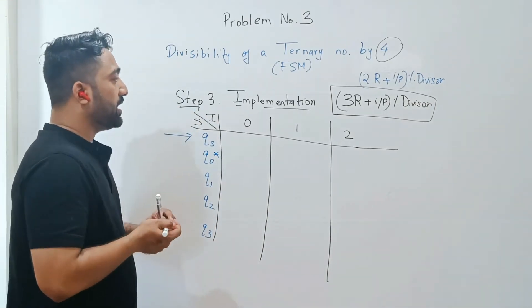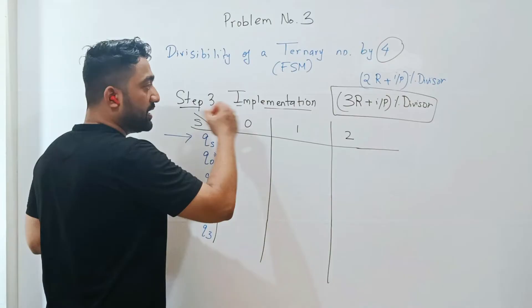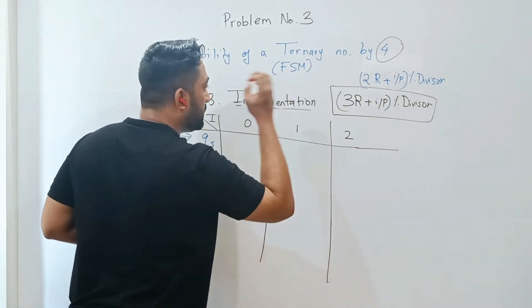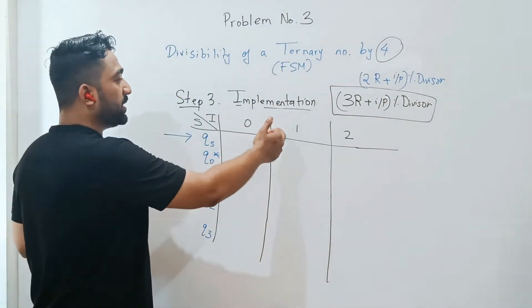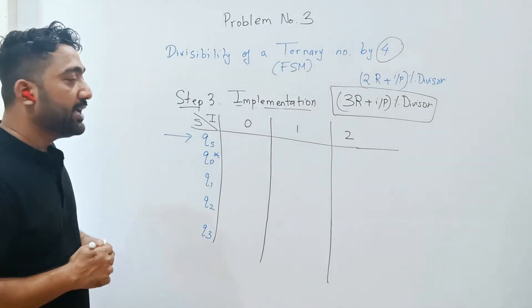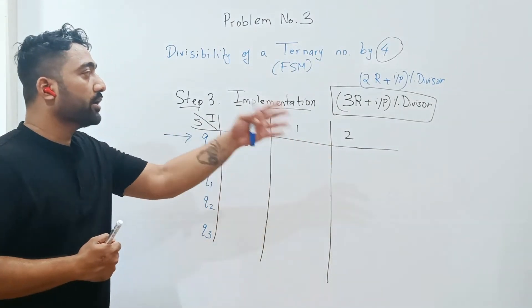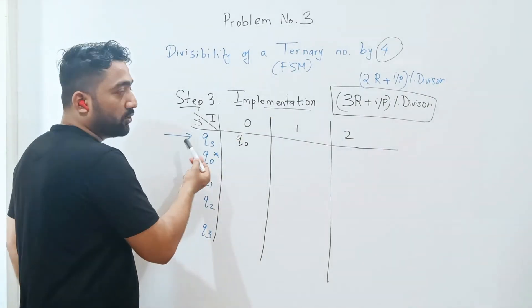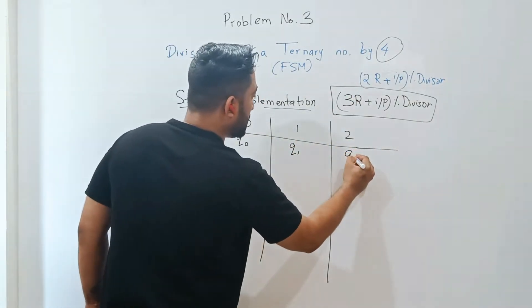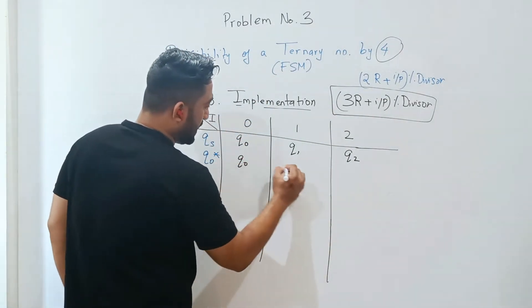If I put the value of r in this formula for qs, qs means remainder will be 0. It becomes 3 times 0, that is 0, plus input. Input is 0, so 0 plus 0 mod 4 is 0, that's q0. Similarly, 3r plus 1 mod 4: 3 times 0 plus 1, so 1 mod 4 is q1. Similarly, 2 mod 4 is q2. Based on the same logic, apply that formula for all these states.